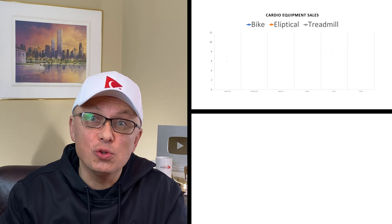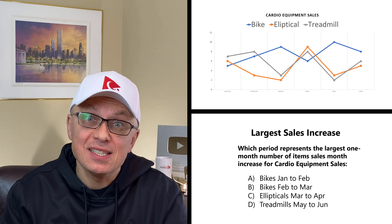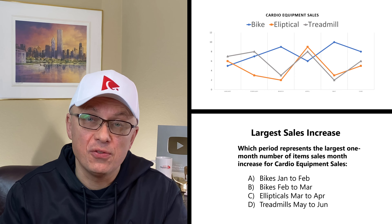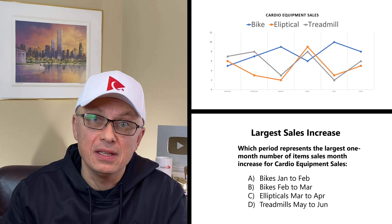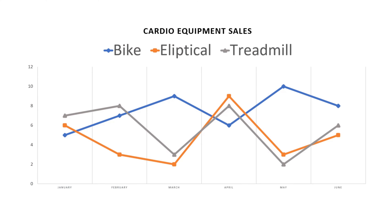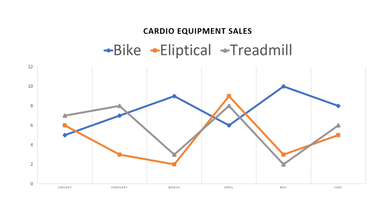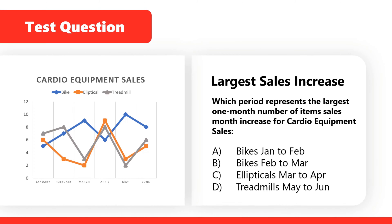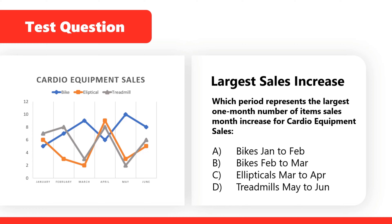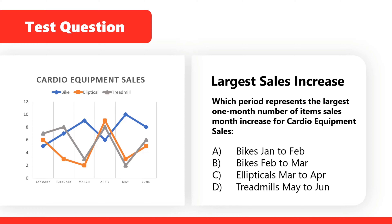Let's go ahead and get started. A lot of times you might get a question which asks you to determine the sales increase. You're typically presented with a graph which shows lines representing different sales. In our case, we are presented with a chart that shows sales of cardio equipment from January to June — sales of bikes represented by the blue line, ellipticals by the orange line, and treadmills by the gray line. The question asks you to determine the largest sales increase — specifically, which period represents the largest one-month number of item sales increase for cardio equipment.